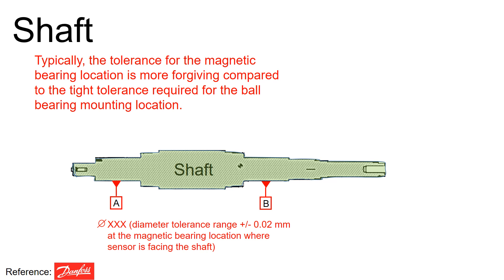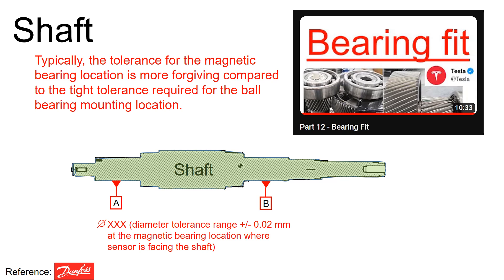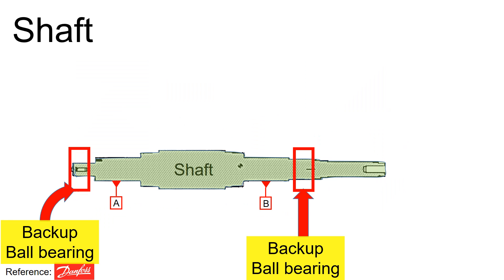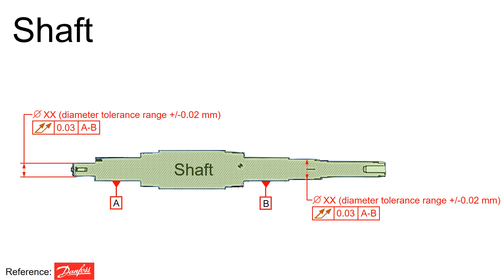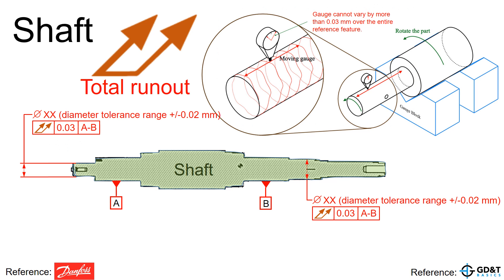This is because the magnetic bearing operates with an air gap while the ball bearing needs a very tight fit control. For details on the ball bearing mounting fit, please consult part 12 video. At the backup ball bearing location, the total runout can be defined as 0.03 mm, which is equal to 30 micrometers. This means the gauge measuring the shaft surface cannot vary by more than 30 micrometers over the entire reference feature.